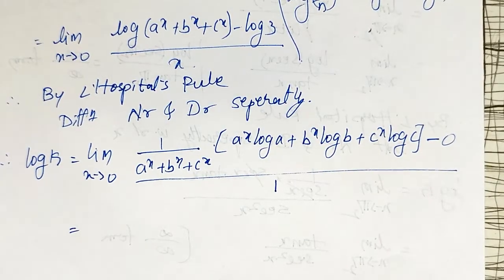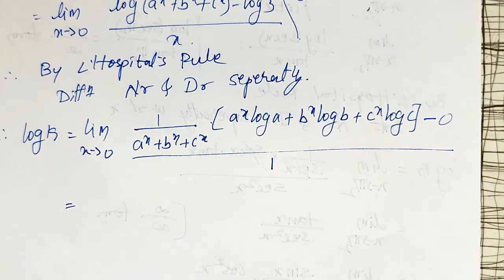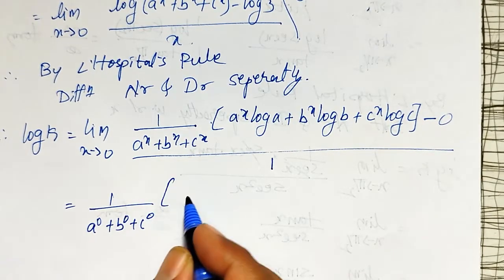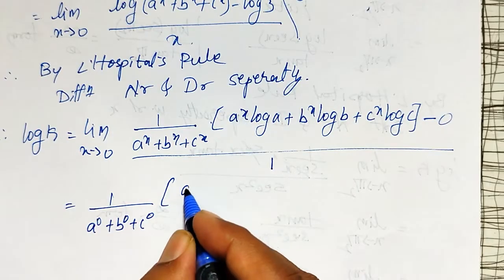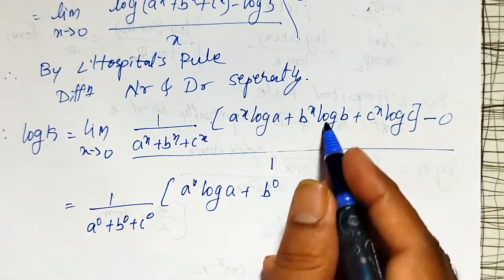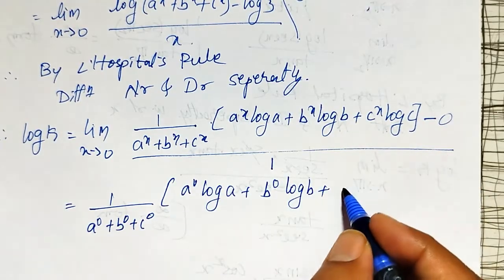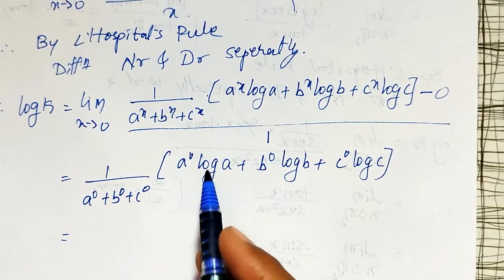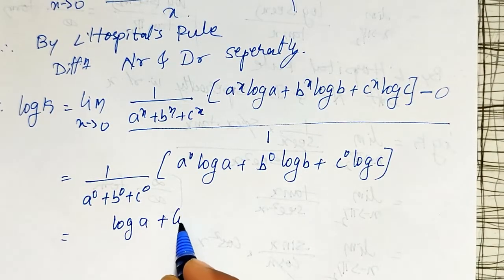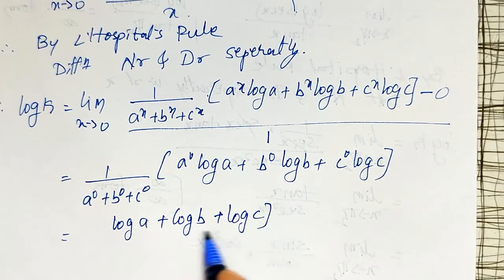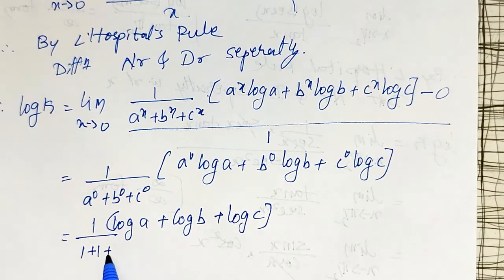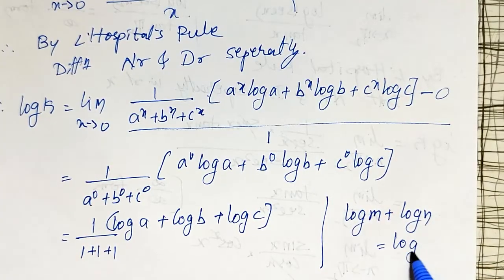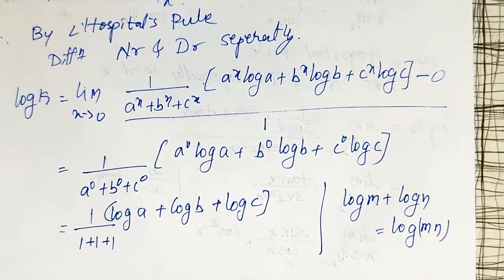Now substituting x = 0: the numerator becomes [1/(a^0 + b^0 + c^0)] · (a^0·log(a) + b^0·log(b) + c^0·log(c)), which simplifies to [1/(1+1+1)] · (log(a) + log(b) + log(c)). Using the property log(m) + log(n) = log(mn), I can write log(a) + log(b) + log(c) = log(abc).